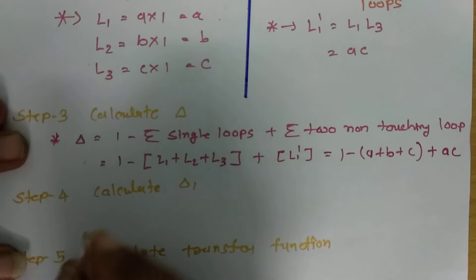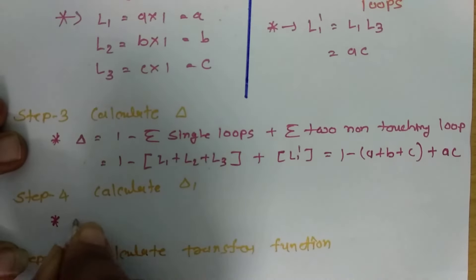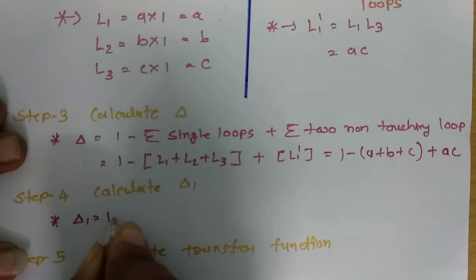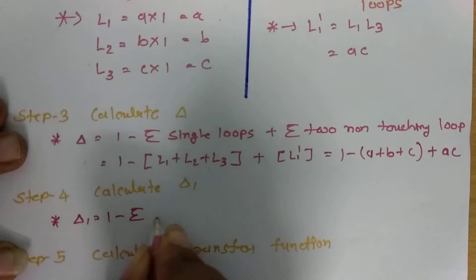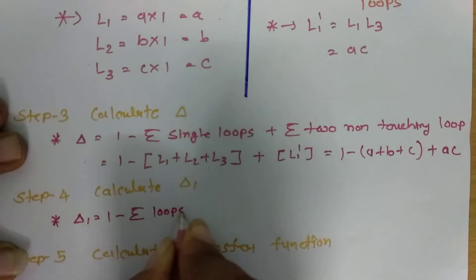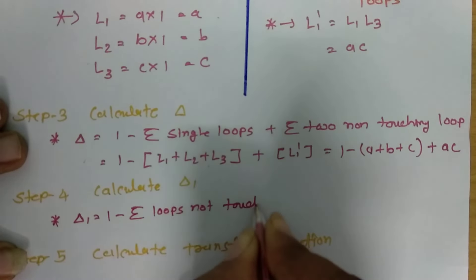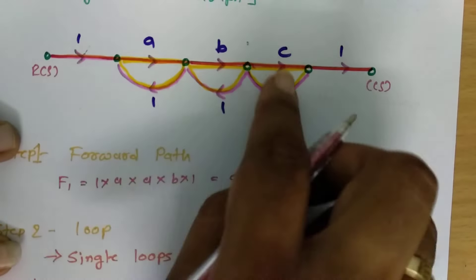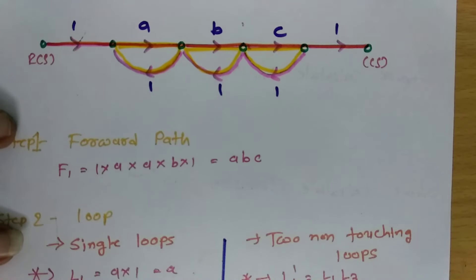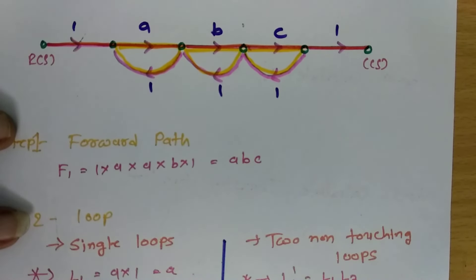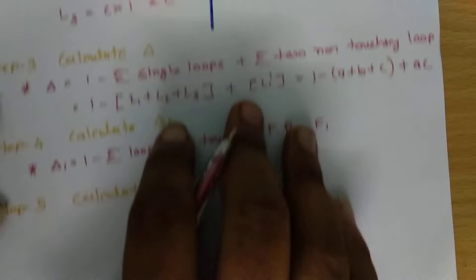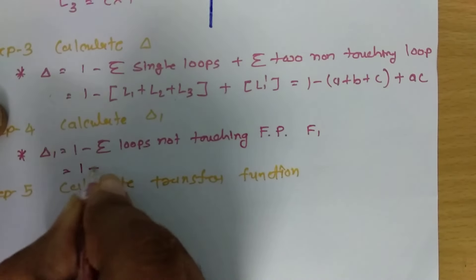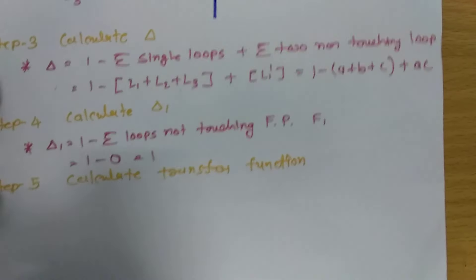Now we calculate delta 1. Since there is only one forward path, delta 1 = 1 minus the summation of loops not touching forward path F1. Looking at this forward path, all loops are touching it — there is no loop that is not touching F1. Therefore, delta 1 equals 1.